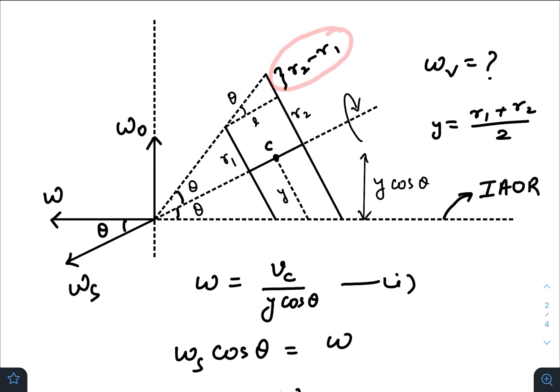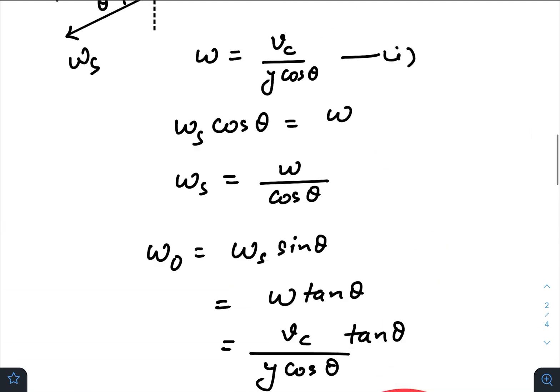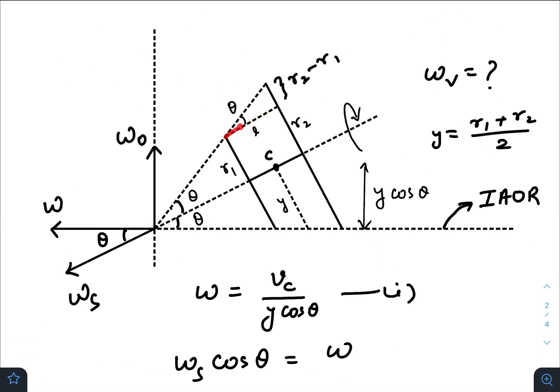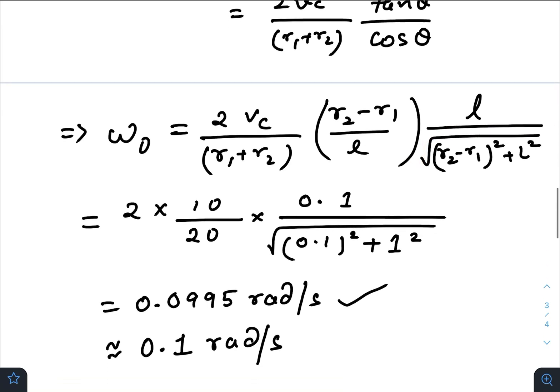So tan θ is perpendicular, that is (r₂ - r₁)/l, so tan θ becomes (r₂ - r₁)/l. Cos θ will be base divided by hypotenuse, that is l divided by this length, so l divided by √[(r₂ - r₁)² + l²]. Now just put the values, you will get this answer.